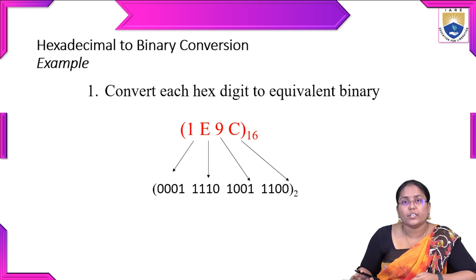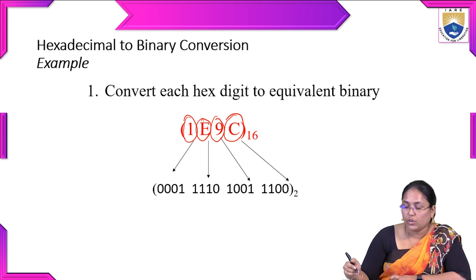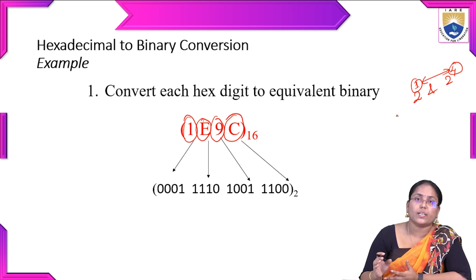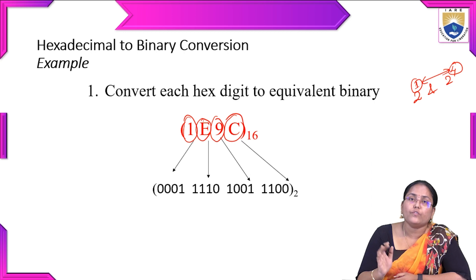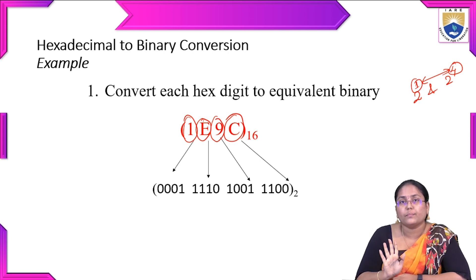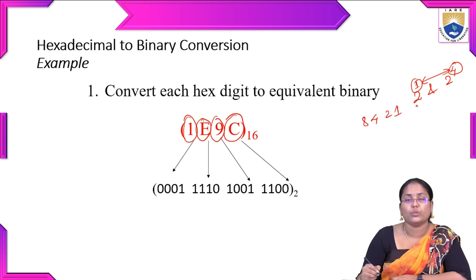Hexadecimal-to-binary conversion works the same way in reverse: represent each hexadecimal digit using 4 binary bits. For example, C = 12 = 8+4, so C = 1100 in binary. Using the 8-4-2-1 notation: position 8 gets a 1 and position 4 gets a 1, giving 1100.